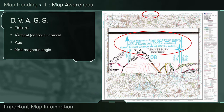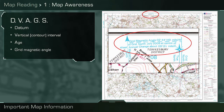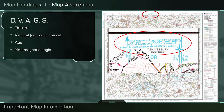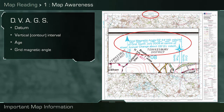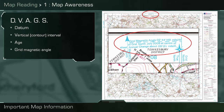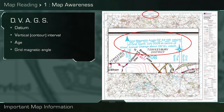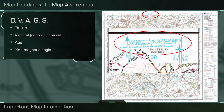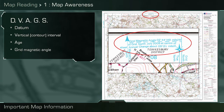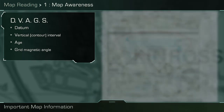G is for grid magnetic angle, or GMA for short, shown in blue text. This will be explained in greater detail in the direction and bearings video, but in short it is the correction you may need to apply to compasses when changing from magnetic to grid bearings.